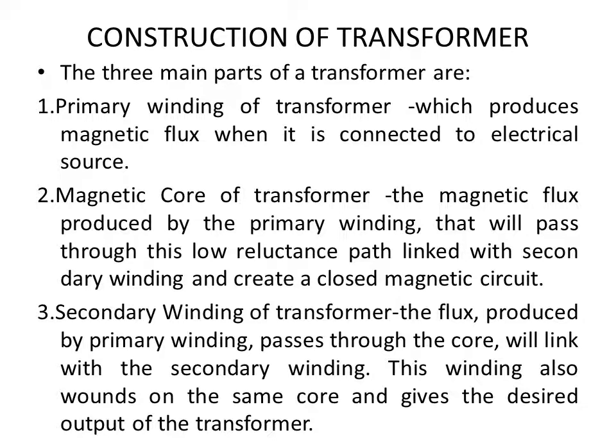You might have seen the transformer — what are the different parts? Transformer has an iron part called the core. On the core, either on two limbs or a center limb, the windings are placed. There are two windings: one is the primary winding and the other is the secondary winding. Primary winding is connected to the supply voltage source, and secondary winding is connected to the load. The three main parts of a transformer are: primary winding, secondary winding, and the magnetic core.